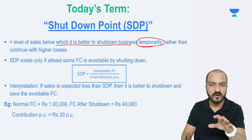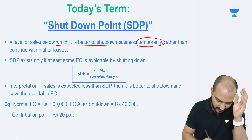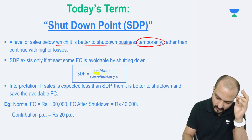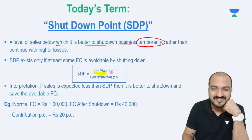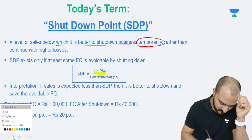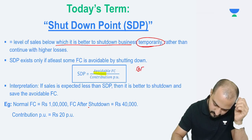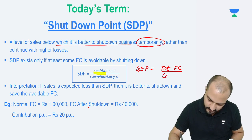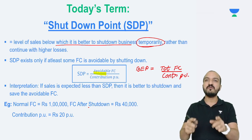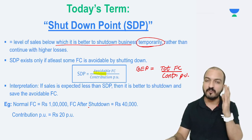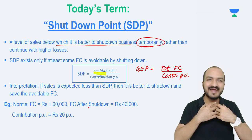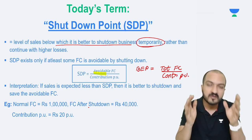My calculation of shutdown point uses a simple formula: shutdown point is avoidable fixed cost divided by contribution per unit. If I compare this with the breakeven point formula — breakeven point is total fixed cost divided by contribution per unit — while shutdown point uses not total fixed cost but only avoidable fixed cost. Breakeven point is where you want to avoid entire loss, so you want to recover the entire fixed cost.